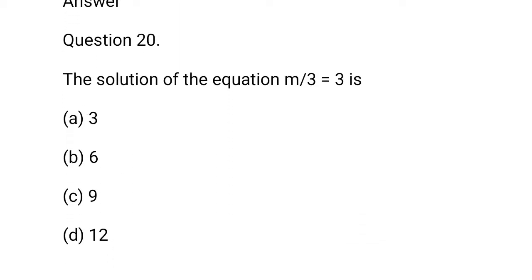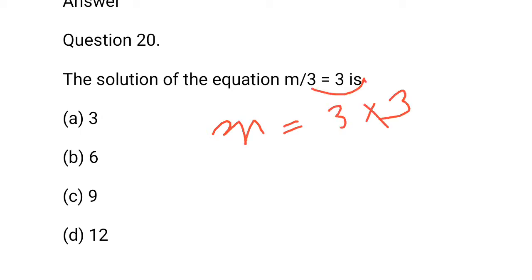The solution of the equation n upon 3 is equal to 3. So, the value will be 3 into 3 — the 3 in the denominator goes up and multiplies. So, this will be equal to 9. c option is correct.